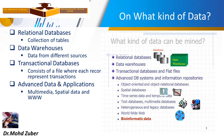On what kind of data can we apply data mining? In the market and industry field, we have relational databases, data warehouses, and transactional databases or flat files. A relational database consists of tables. A data warehouse collects data from different sources. A transactional database consists of files where each record represents a transaction. Advanced data applications include multimedia and spatial data.